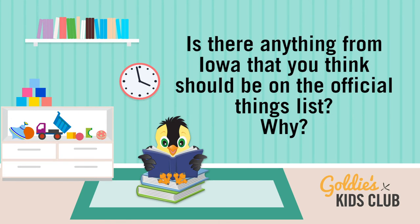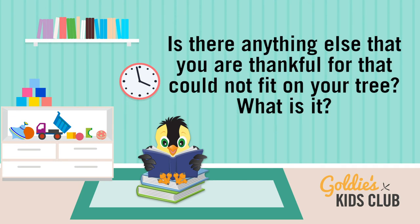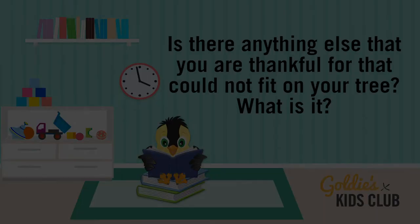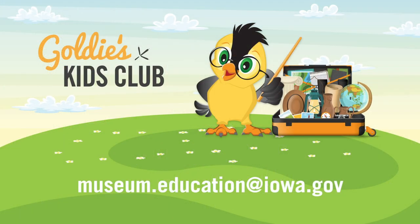Iowa has had many official things, including a state bird — the goldfinch — and the wild rose as the state flower. Is there anything from Iowa that you think should be included on the official things list, and why? Is there anything else you are thankful for that could not fit on your tree? If so, what is it? As always, we'd love to see your creations, so share your photos of your thankful tree to museum2education.iowa.gov.